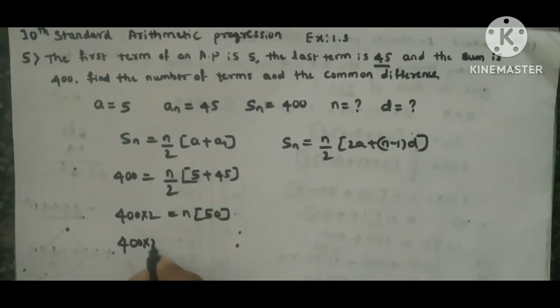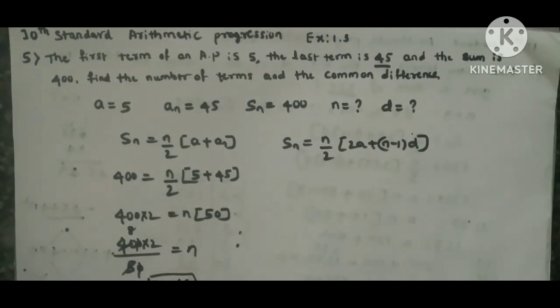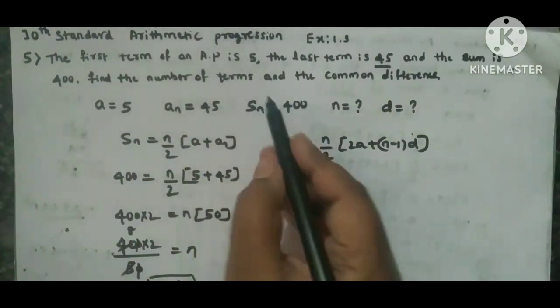This 50 I'll take left side, so 400 × 2 / 50. Zeros cancel, 5 ones or 5 eights, so 8 × 2 = 16. So n value is 16, means number of terms. How many terms are there? 16 terms are there.